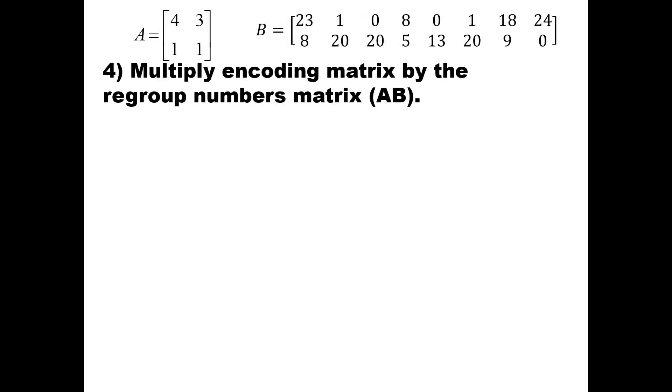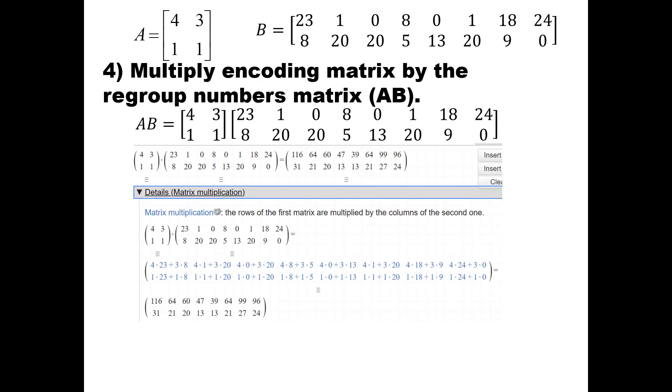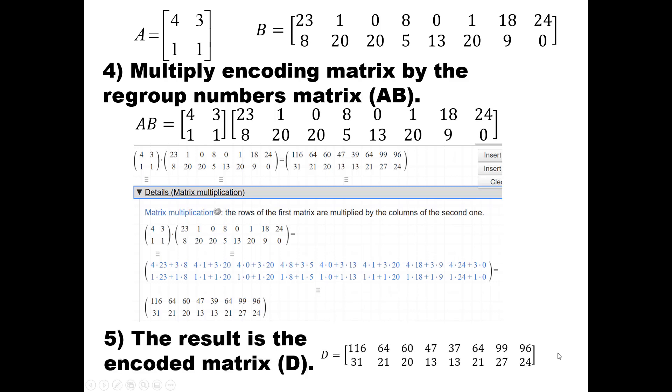Now we're simply going to multiply A times B. So I use matrixcalc.org to help me with this. If you have to do it by hand, I also gave you exactly what you have to do. But in the end, our result is the D matrix, and this is the secret code we're going to send to a friend.